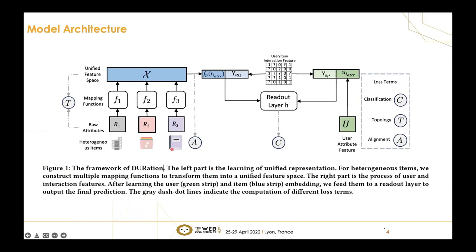Here is the framework of our model. We use a typical two-tower architecture, and the left side is the part of item embeddings. For heterogeneous items, we construct multiple mapping functions and transform them into a unified feature space. Then, concatenate them with user features and interaction features. After that, we feed them to the readout layer to obtain the final prediction.